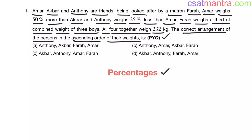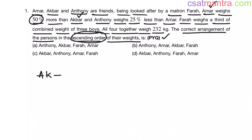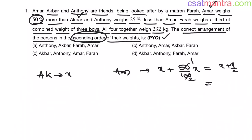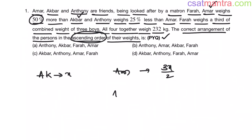We want their weights in ascending order. It is given that Ammar weighs 50% more than Akbar. Let's call Akbar's weight as x. Then Ammar's weight would be x plus 50% of x, which equals x plus x/2, giving us 3x/2. So Ammar's weight is 3x/2.